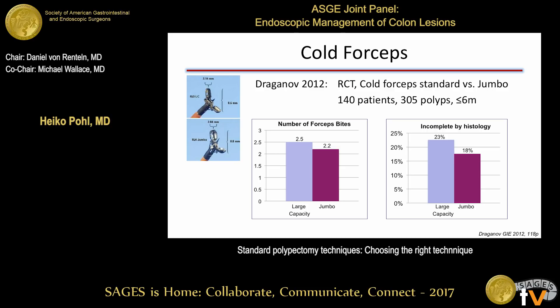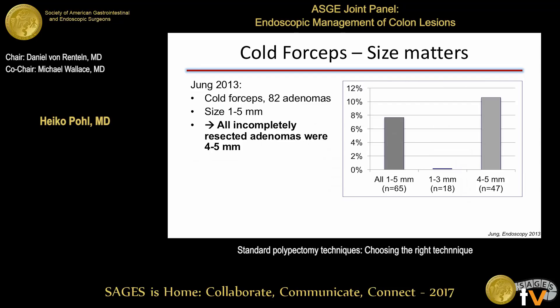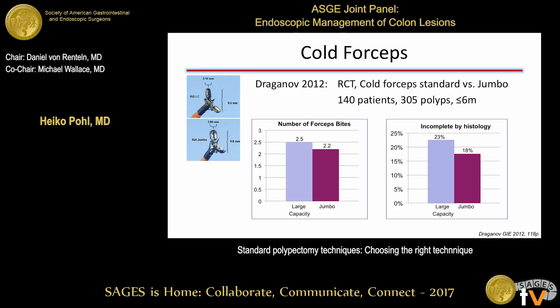An interesting study by Peter Draganev used jumbo forceps with a 2.3-millimeter cup, taking multiple bites until the polyp is visibly gone. You still need about 2.5 bites with regular forceps and nearly as many with jumbo forceps to achieve visible complete removal. But even so, the incomplete resection rate with jumbo forceps is still 20%—one in five polyps incompletely removed regardless of whether you use jumbo or regular forceps.